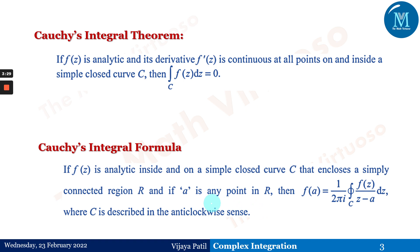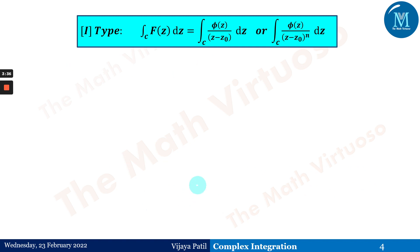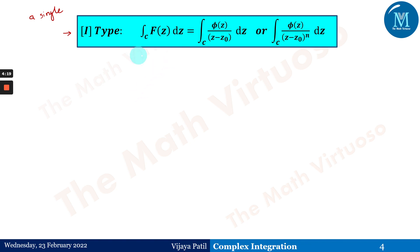Let us concentrate on the flowchart — the approach to solving different types of questions. In Type 1, we have the integration of F(z) dz over closed curve C, which equals integration of φ(z) upon (z minus z₀) dz, or integration of φ(z) upon (z minus z₀)ⁿ over curve C dz. Type 1 deals with a single point — a single singularity or pole of the function.